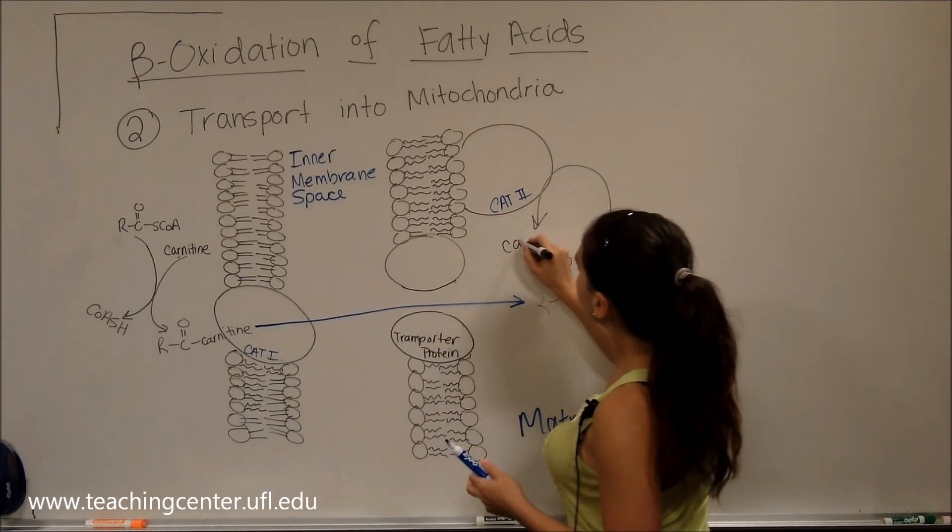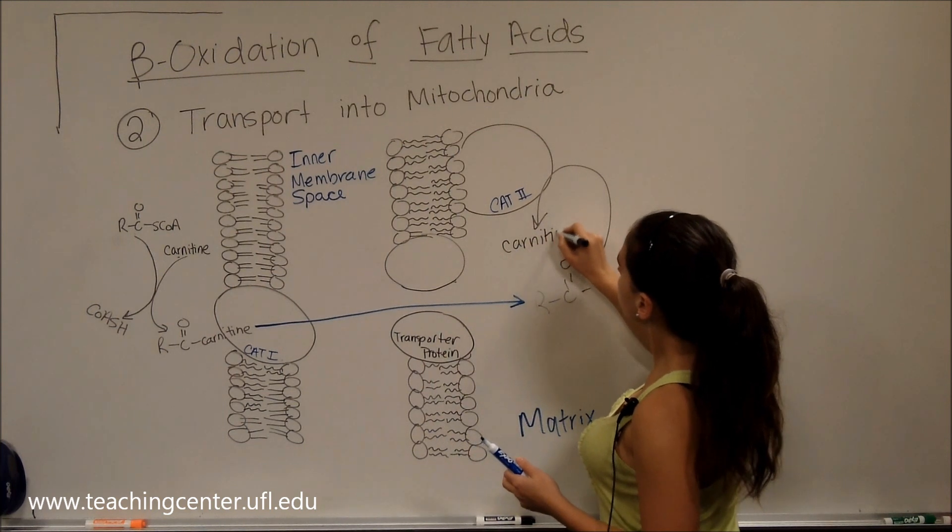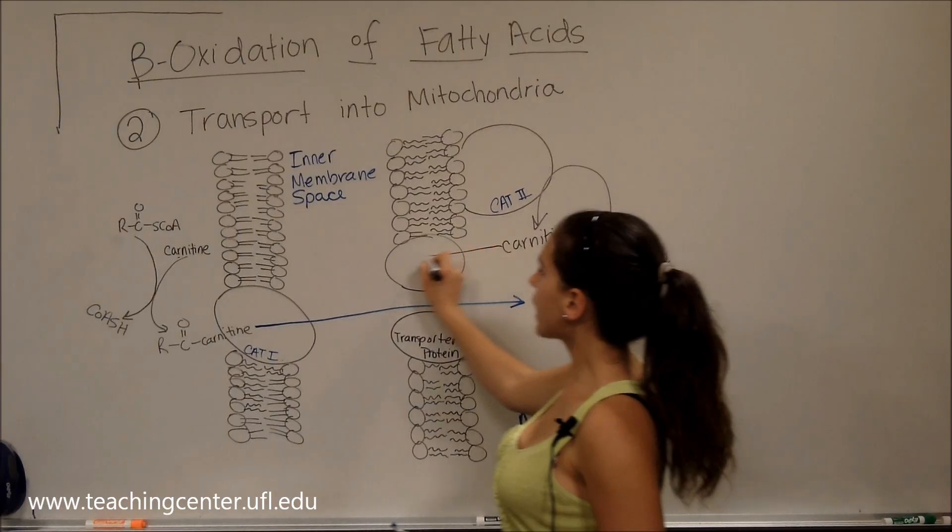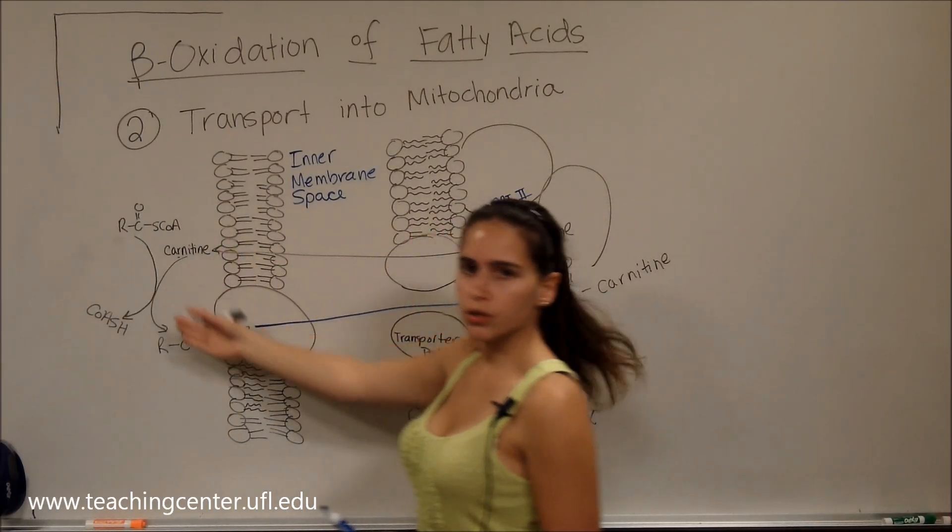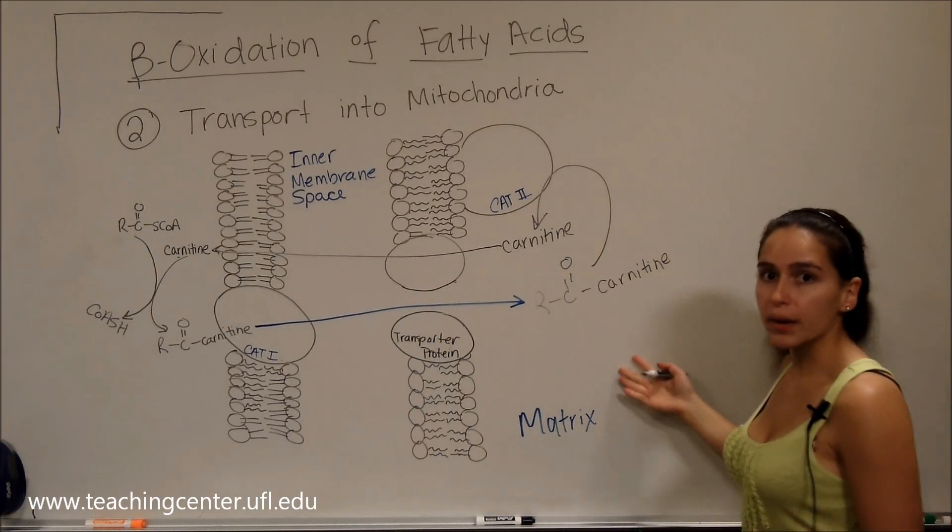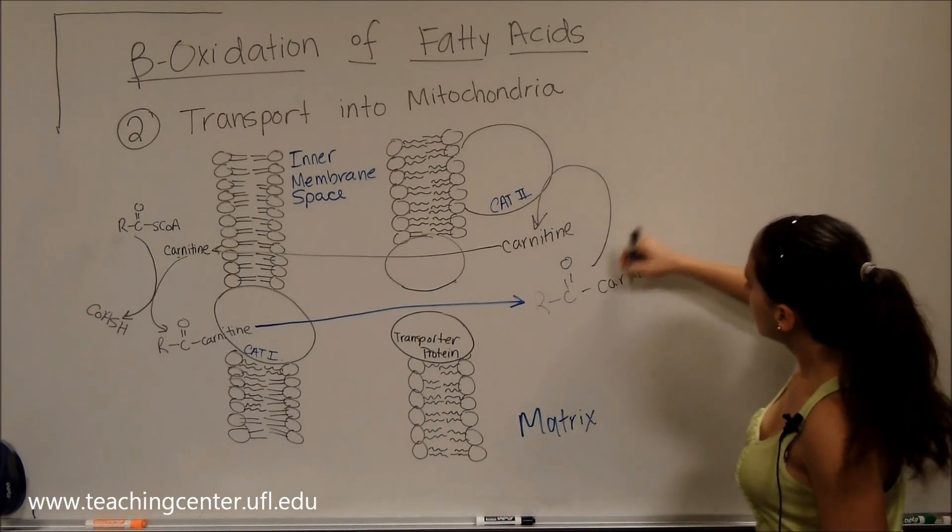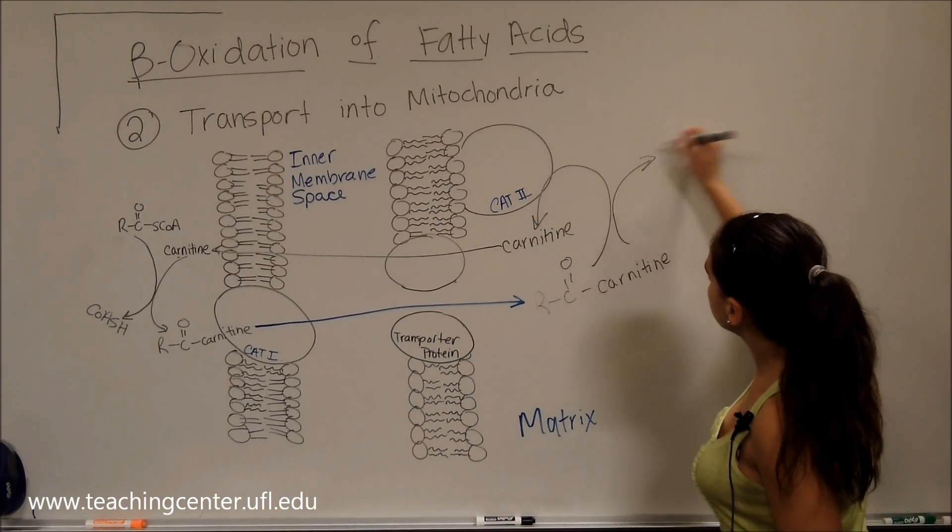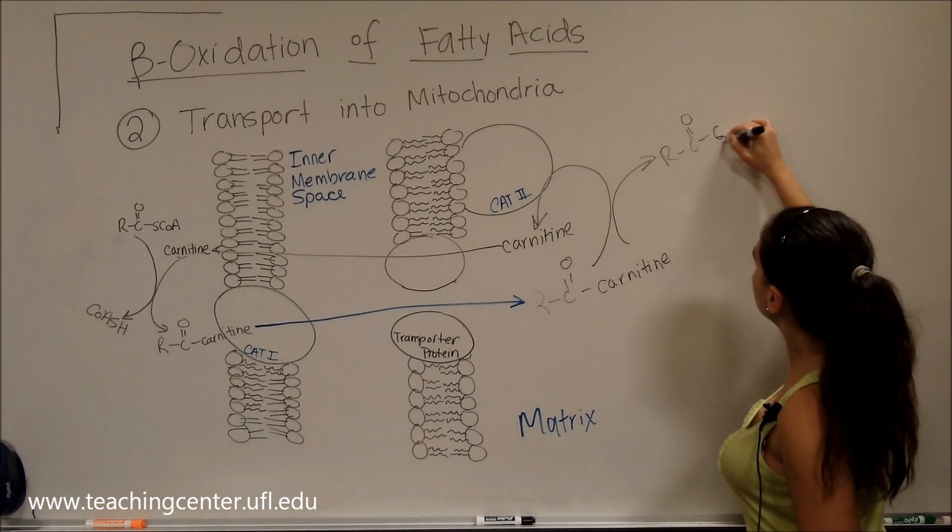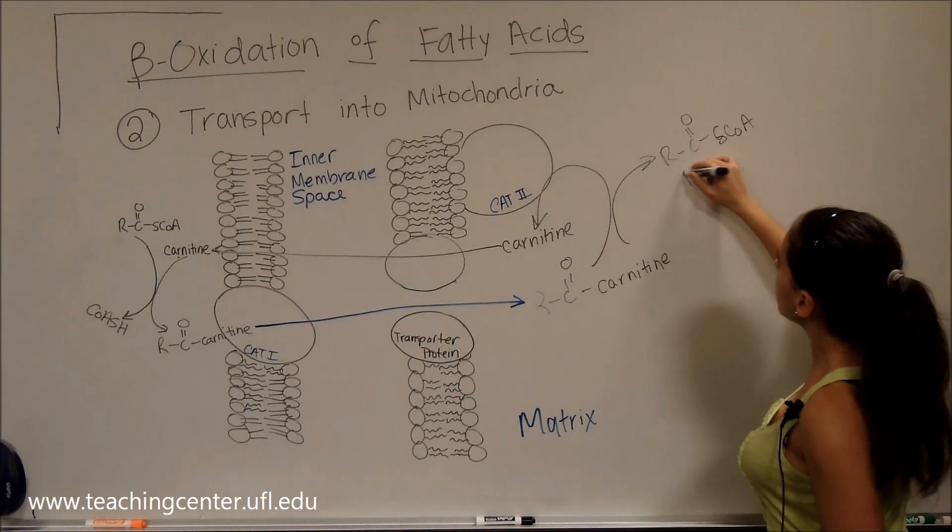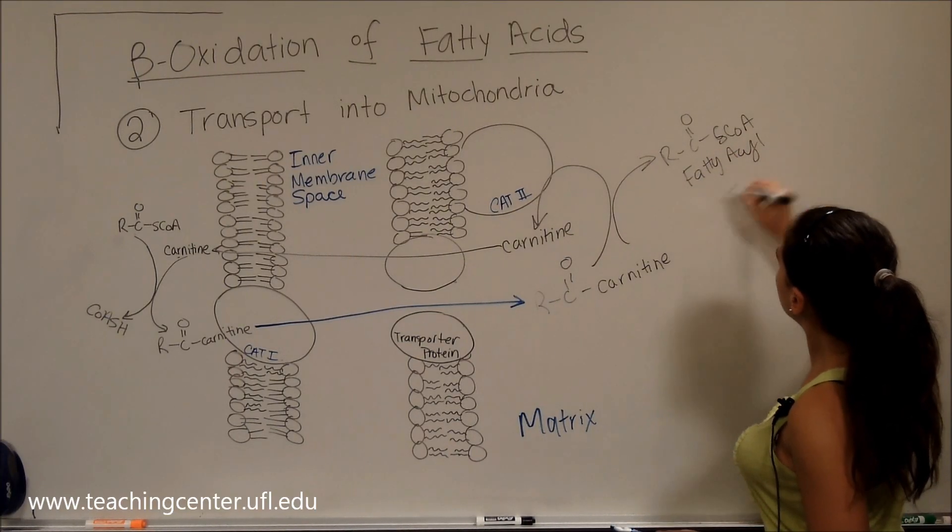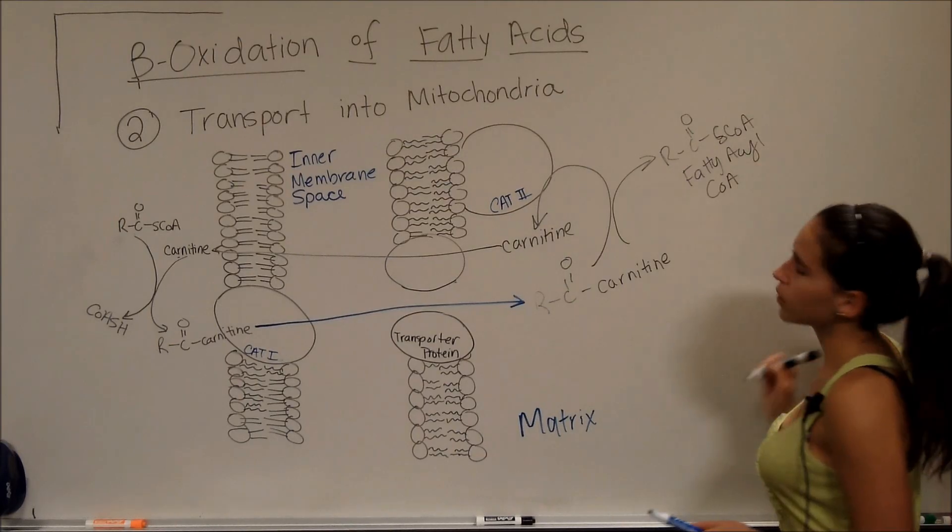And our carnitine here that we've taken off is going to be reshuttled back out and reused to bring in more fatty acyl CoAs into the matrix, where beta oxidation is going to occur. And our fatty acyl is going to be returned to its fatty acyl CoA structure.